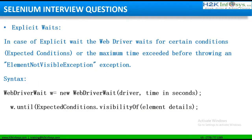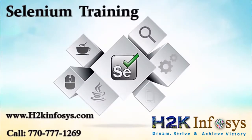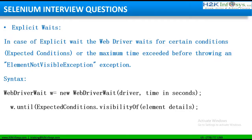Now let us look at explicit wait. In the case of explicit wait, we make use of two things: expected conditions and maximum time. Explicit wait is an intelligent kind of wait applied for a specific element — it is a dynamic wait for any particular element on a web page. We ask the web driver to wait for certain expected conditions. If the condition is satisfied and the element is visible, the tool goes ahead and executes the next step. Or we ask the tool to wait for maximum time while the condition should be satisfied and the element should be available on the web page.